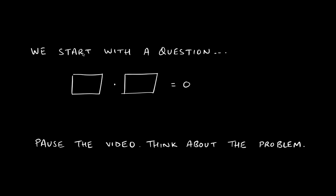Let's say I give you two boxes and I want you to put either one number in the same box, or two numbers in different boxes. The numbers could be positive, negative, decimals, fractions — whatever numbers you want to come up with. There's one restriction.